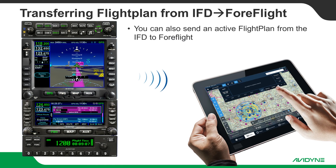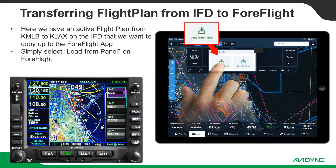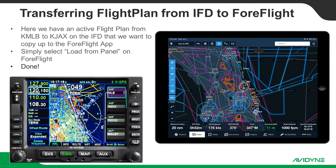If you want to transfer a flight plan from the IFD up to ForeFlight — say you've manually edited a flight plan on the IFD and want to save it into ForeFlight for future reference — the process is the same. Go over to your active flight plan on the IFD, then from ForeFlight, touch that same icon and select "load from panel." Touch that button and boom, there's your flight plan — in this case, from Melbourne up to Jacksonville on the Victor 3. Very easy, simple process.